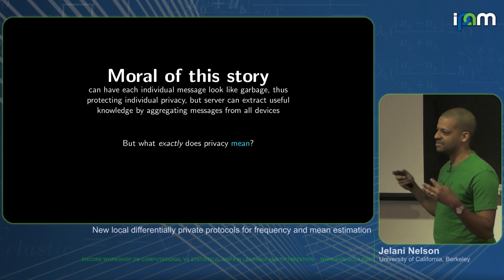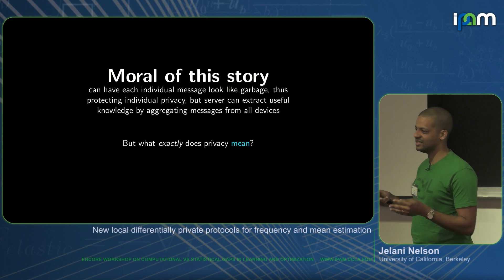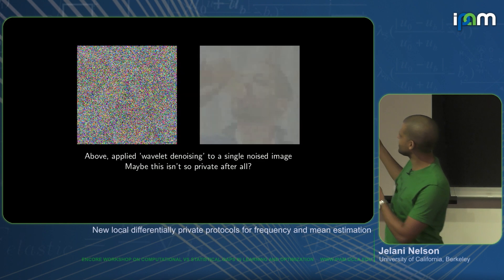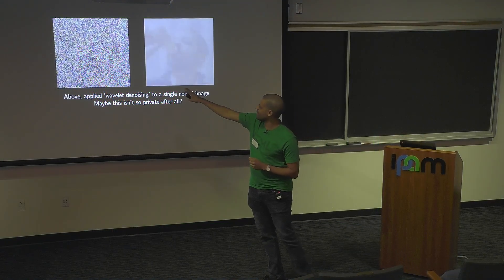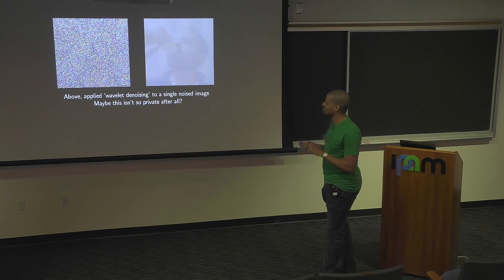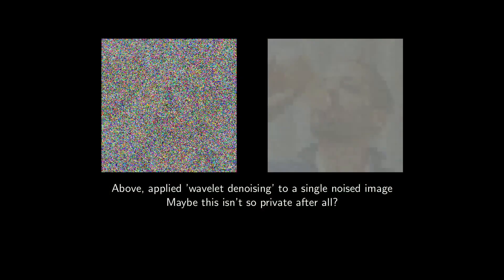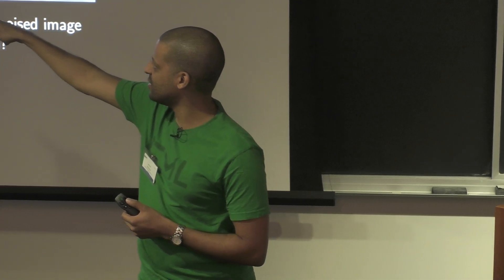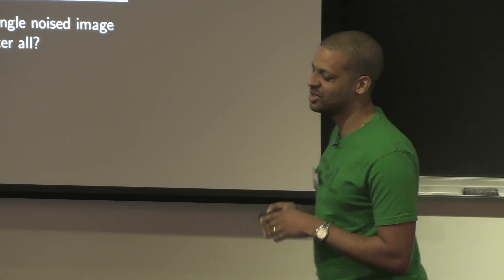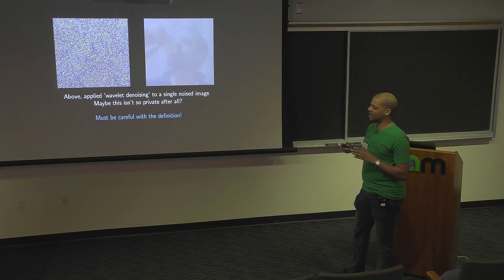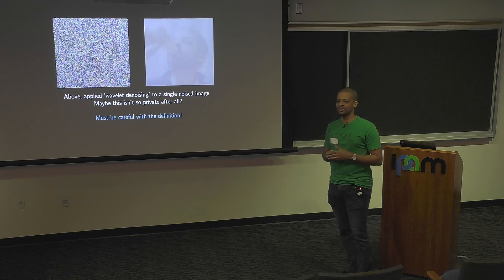But what exactly does privacy mean? Does adding static like I showed you actually give what you want? Probably not. I took that image of me with a bottle, heavily noisified it, then ran it through a Python library with wavelet denoising. And it spat out a recognizable image. This is concerning because you can kind of tell it's a person drinking something — you shouldn't be able to do that. So we have to be careful with the definition and come up with mechanisms that provably satisfy it.